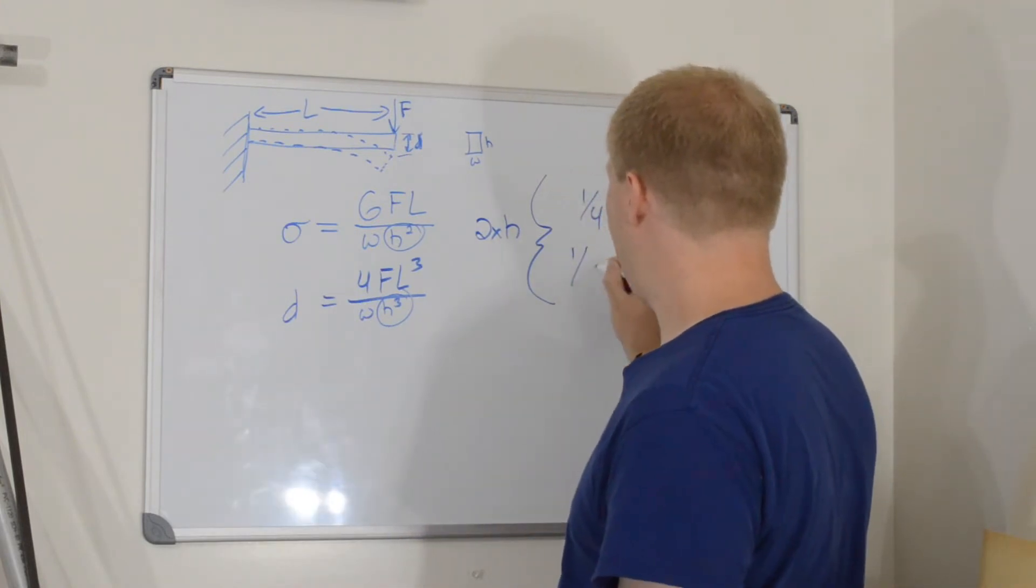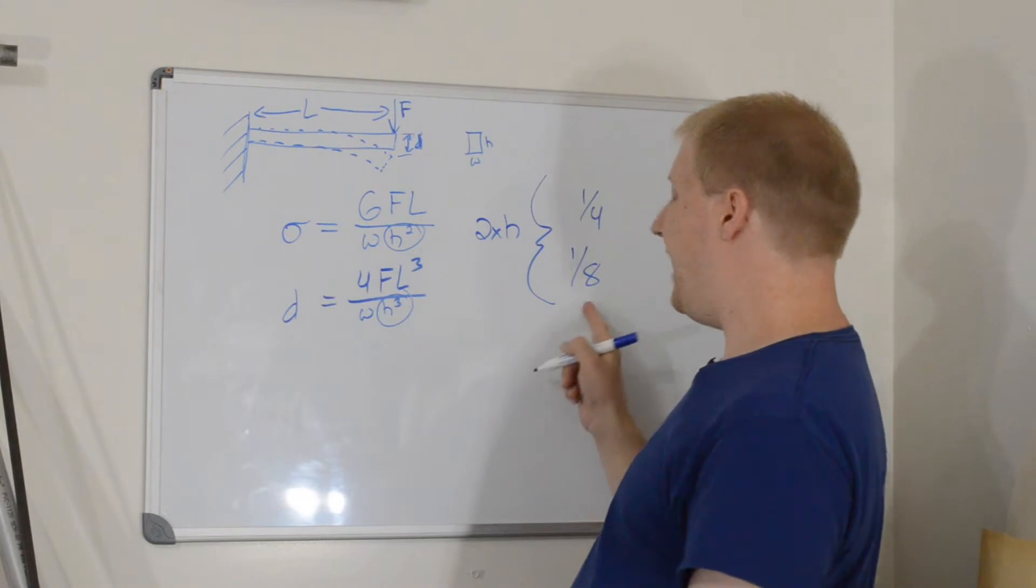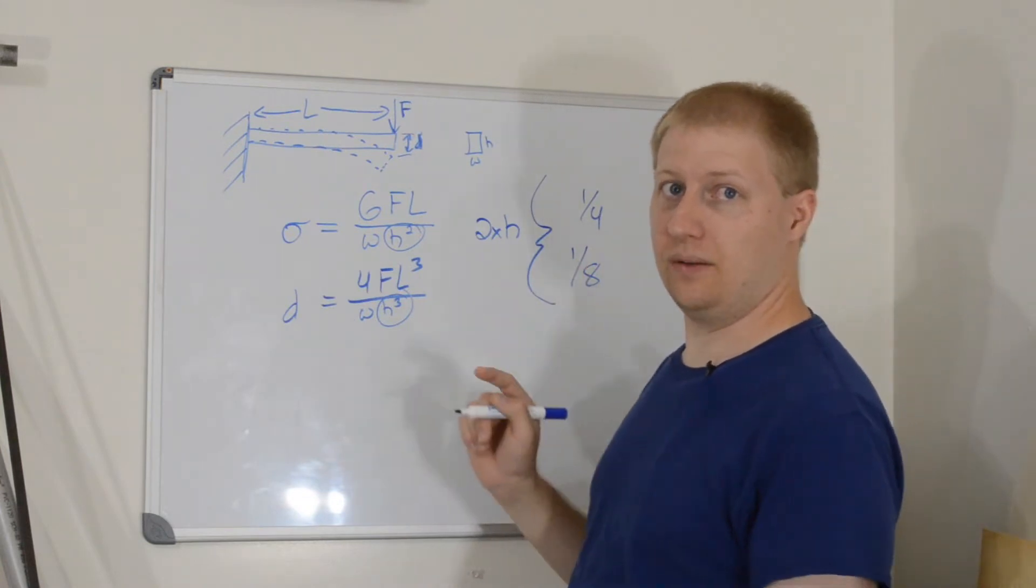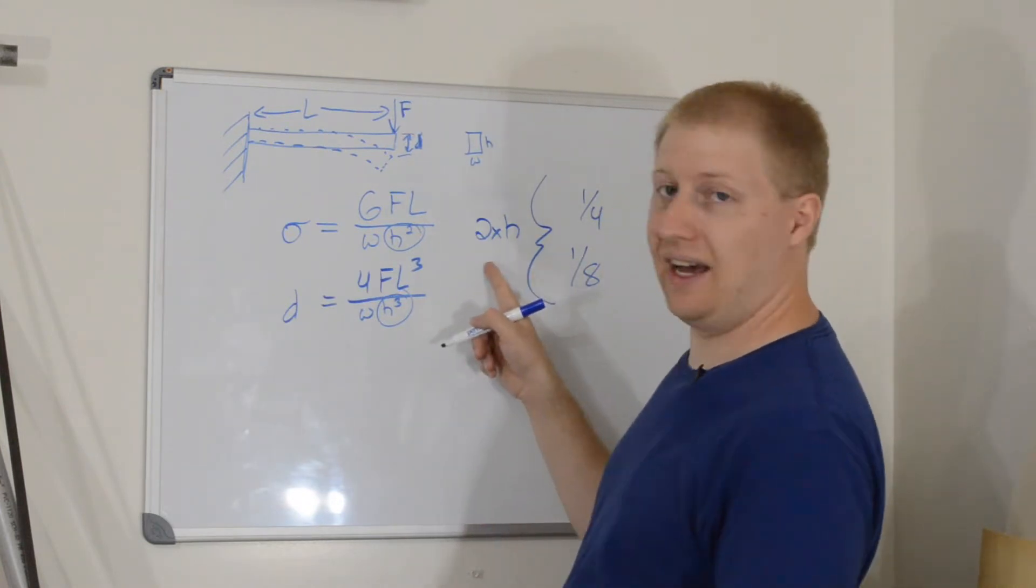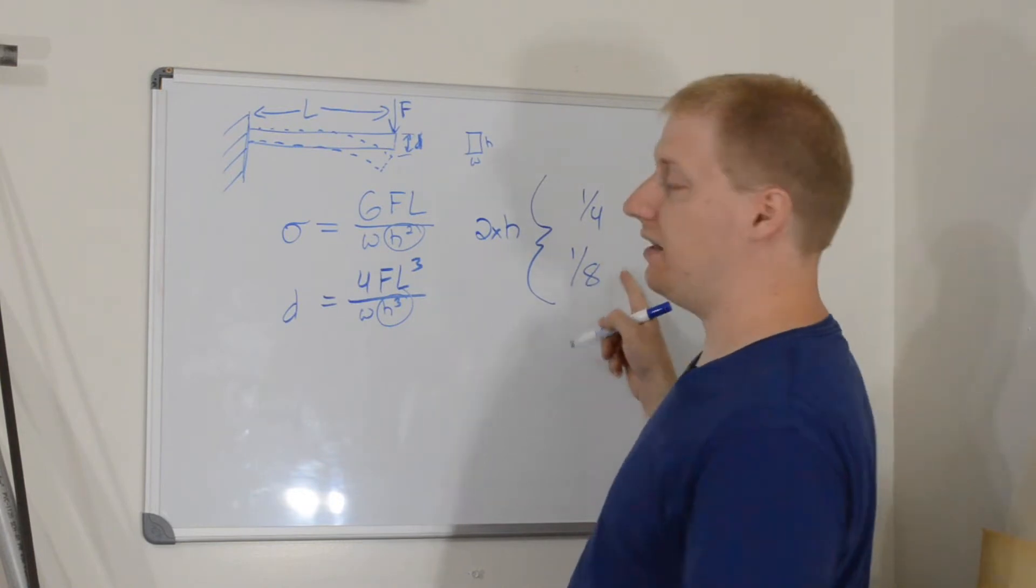So, it's 1 eighth, I don't know if you can see that, 1 eighth the amount of deflection. So, doubling the height gives us 1 quarter the stress and 1 eighth the deflection. So, it is 4 times stronger,